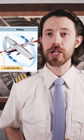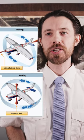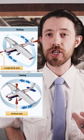What causes Dutch Roll? Dutch Roll is a type of aircraft instability characterized by a rolling and yawing motion. It is caused by the combination of differences in the lateral stability and directional stability of an aircraft.